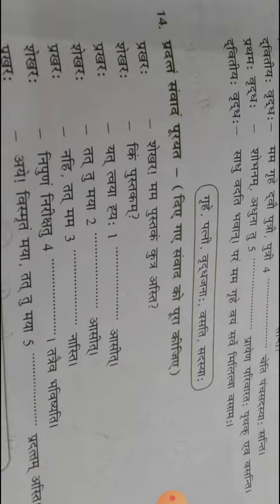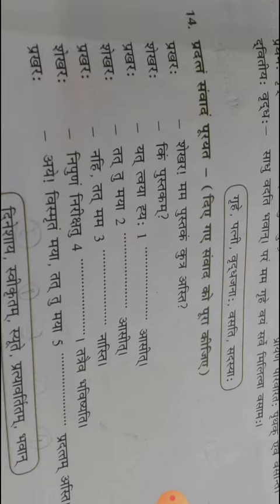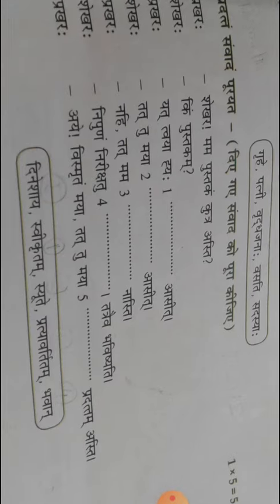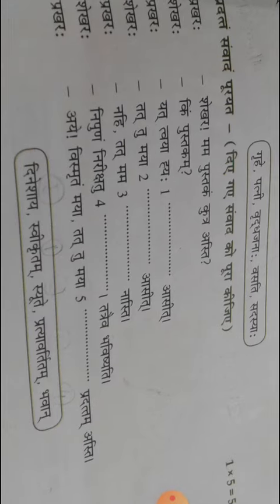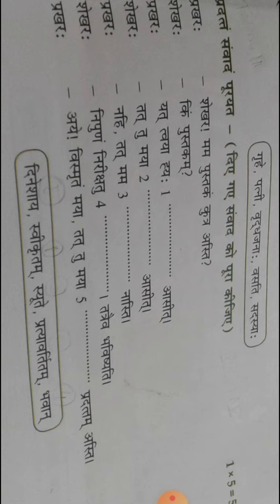So this is one bhartalav. Another one — dineshaya sikritam, granted, sute back, pratyavartitam — to return back — and bhavan. So this is Prakhara and Shekhara, two characters are there. Here also, with the help of the options, you have to complete the bhartalav.